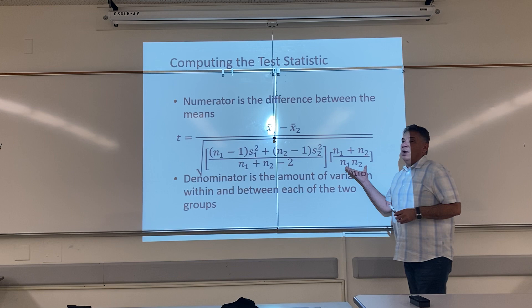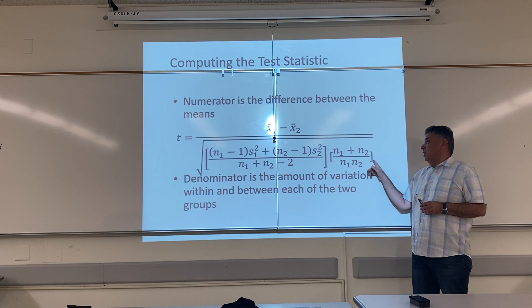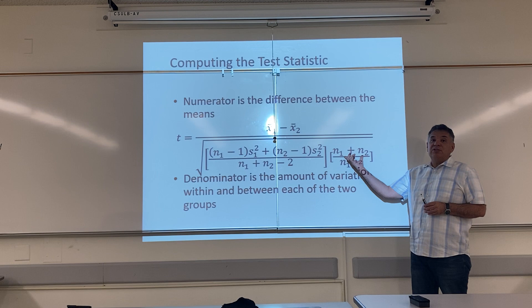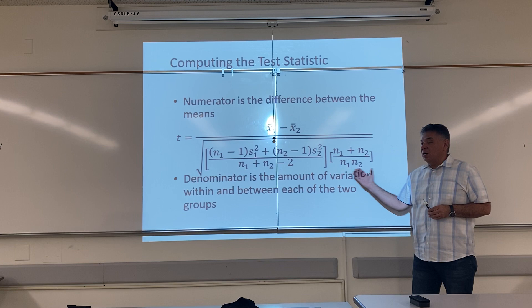The second part of the denominator is a weight. The groups don't have to be the same size — they can be different sizes. So to adjust for that, we have a weight. That fraction is: the number of people in group one plus the number of people in group two — our total sample size — divided by n1 times n2, the product of the sizes of both groups. This is our formula.